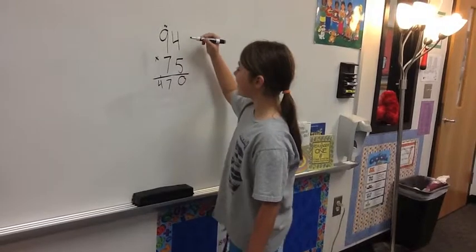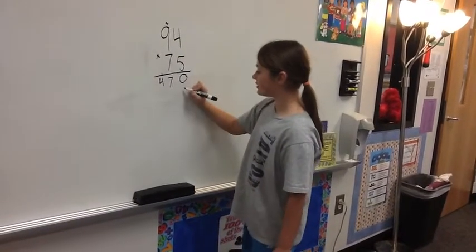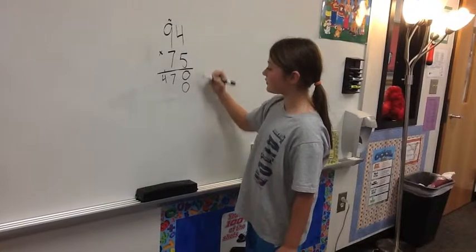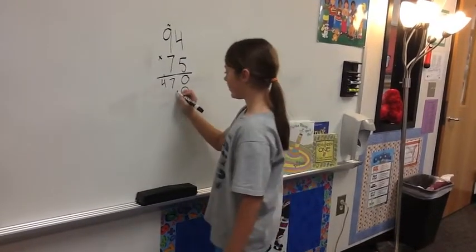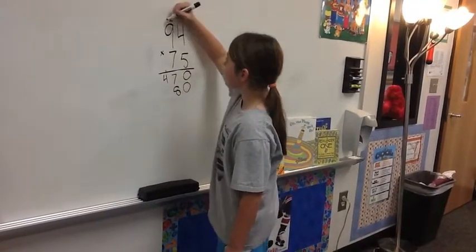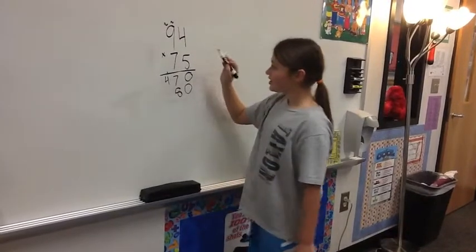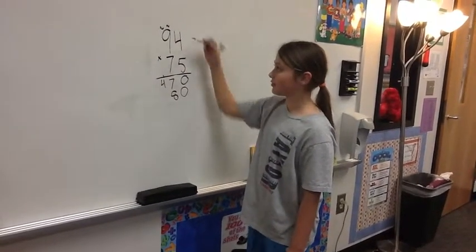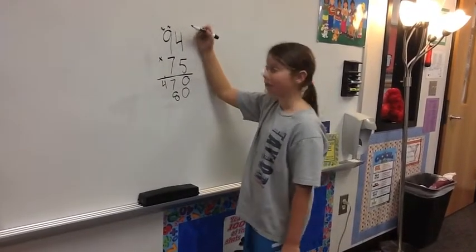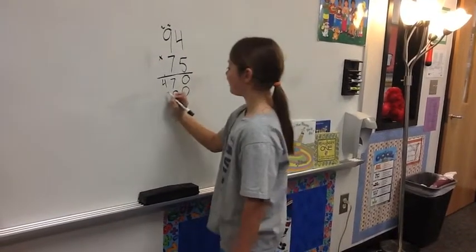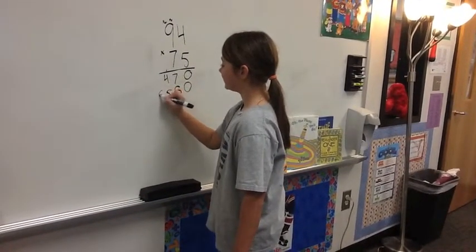Then 7 times 4. 7 starts in the tens place, so you have to put a zero to hold it. So 7 times 4 would be 28. So 8, and you carry your 2. 7 times 9 is 63, but you always have to add the number that's up here. So 63, 64, 65.